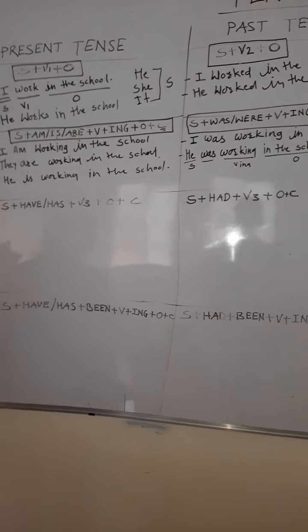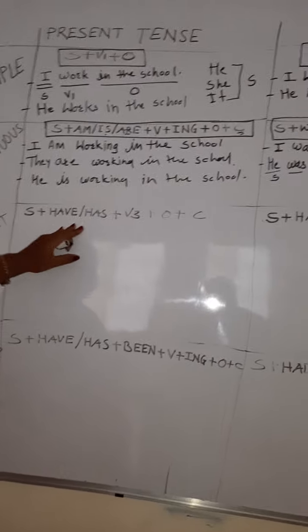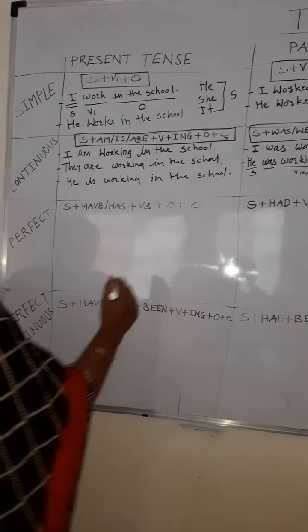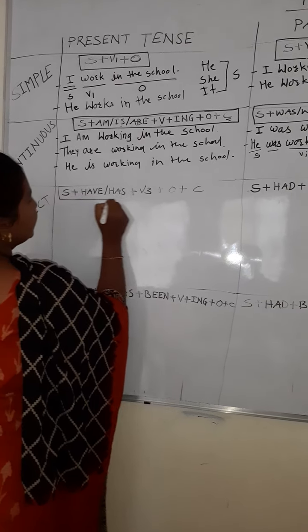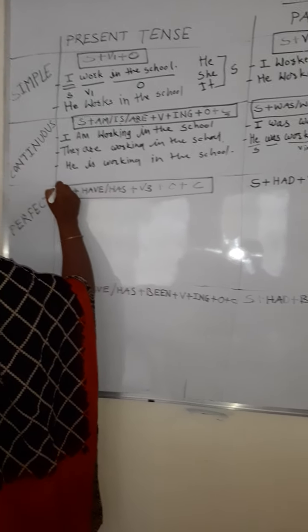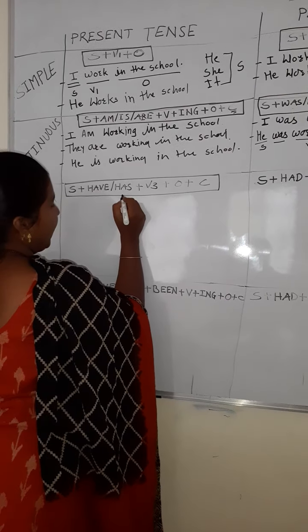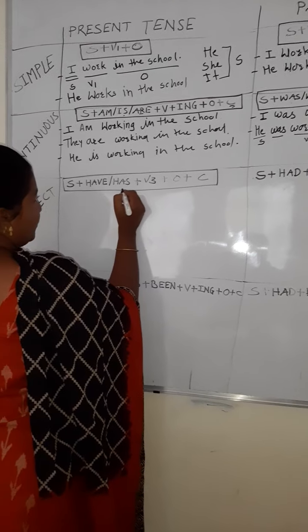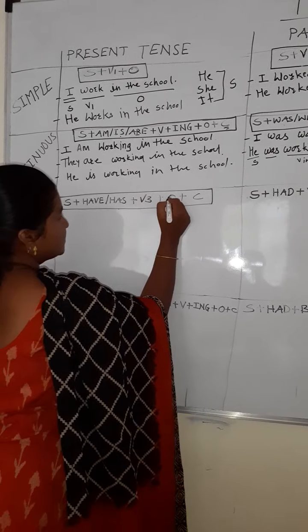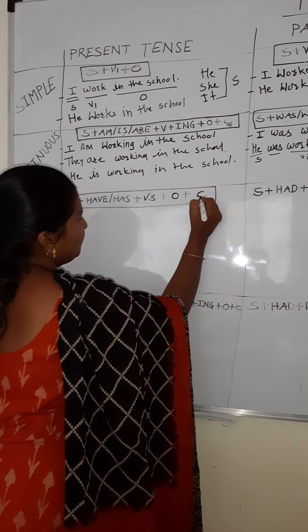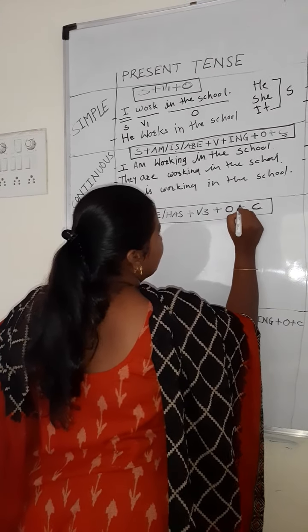Let us go to the perfect present tense first. The formula is already written here: subject plus have or has, then V3, plus object, plus complement. The complement is added only if it is present in the sentence; otherwise, no need to add it.